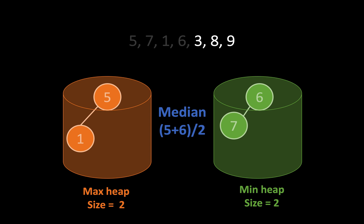Now we look at 3, we put it in the max heap. Because the max heap size is 3 whereas the min heap size is 2, the median would be 5, which is the root of the heap that has a greater length.